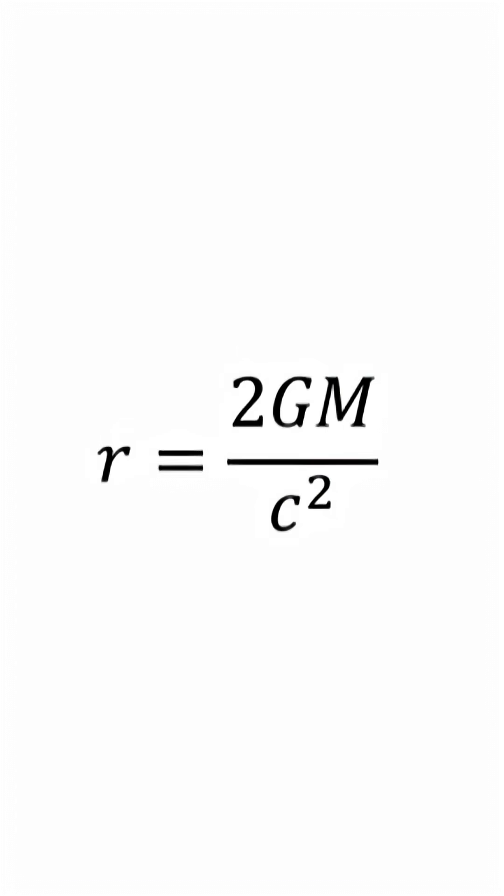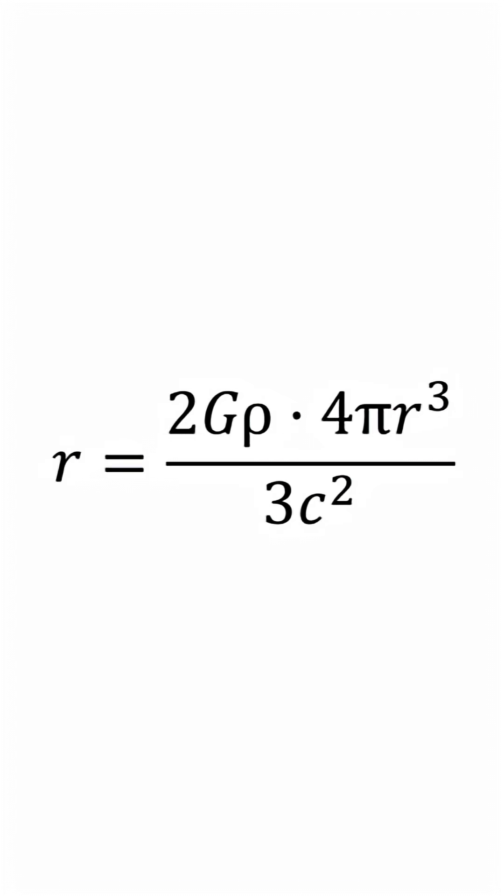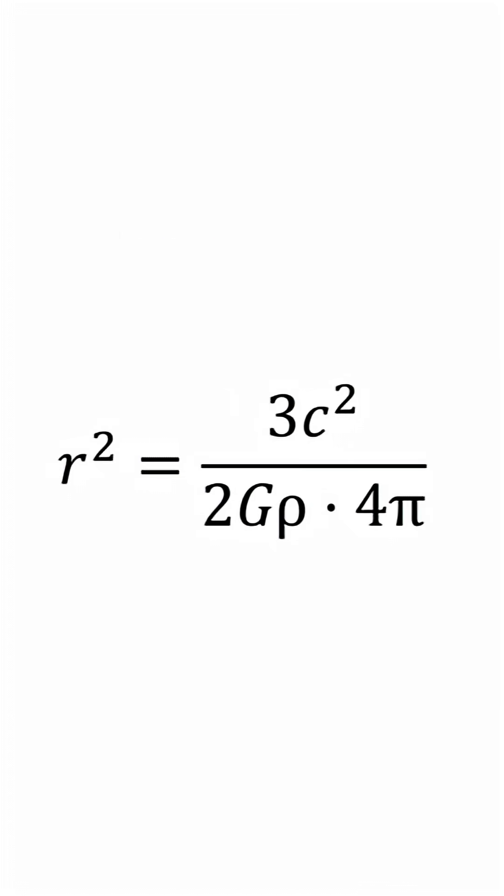Bear with me. So first, we turn this mass into the density times volume of a sphere, and the volume will be 4 pi r cubed divided by 3. Then we cancel out this r, isolate r squared.